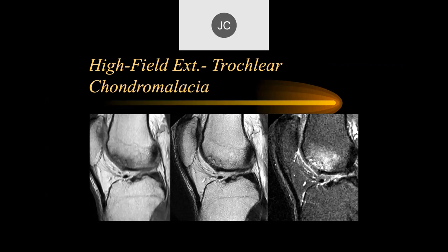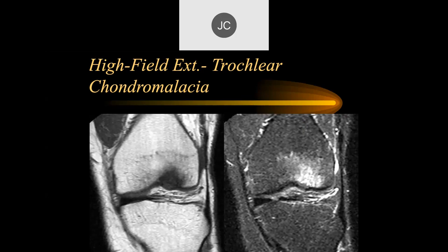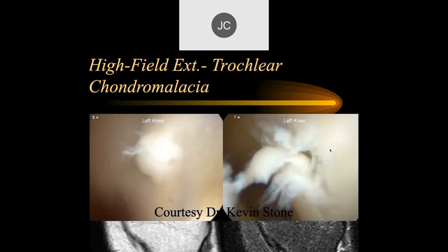Here we don't really see a full thickness defect within the articular cartilage in these images. On the axials, there's a lot more irregularity of that bone suggesting full thickness defect. What does this look like at arthroscopy? At arthroscopy, this is what it really looked like — very degenerated, loose, unstable articular cartilage with full thickness defects, all kind of crab meat here.